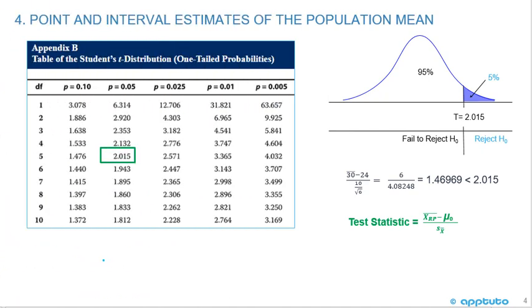We'll just work on that example a little bit more with more information to help consolidate your understanding. The first thing that we need to do is calculate the test statistic. We had our average, 30 million, minus our mu, which was our population average of 24. So we had six as our numerator. And our denominator was our standard deviation divided by the square root of n, which is our standard error. So we calculated our test statistic of 1.46969, and we needed to compare it versus a critical value. Where did we find that critical value?